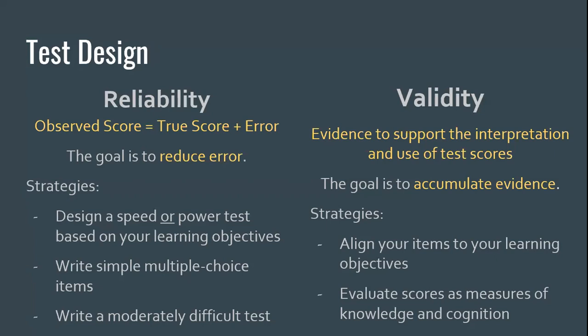Reliability is really about scores — we want to produce a test that will produce reliable scores. Strategies to increase reliability include designing a speed or power test based on your learning objectives. A speed test has a time restriction and measures how quickly someone can do something. For most of us though, we're really interested in a power test — seeing what students know and can do. In in-person classes with limited time, these two can get conflated, so it's important to give ample time.